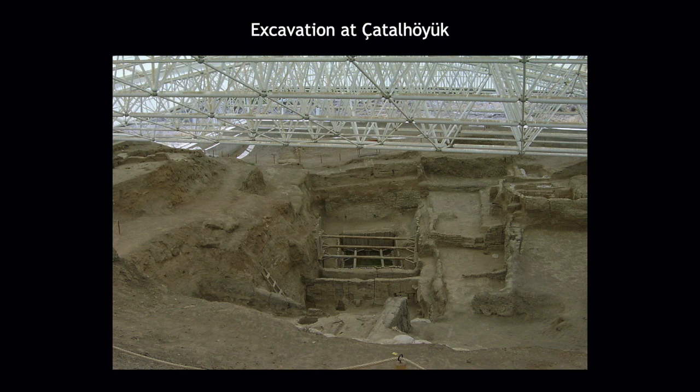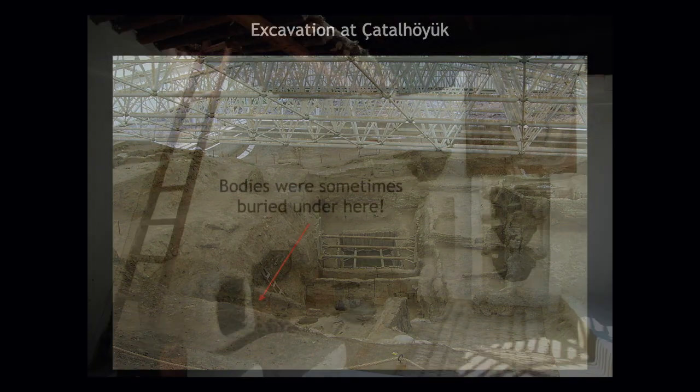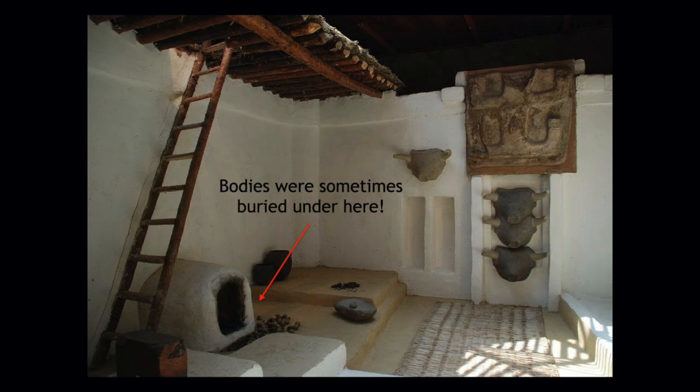There were no footpaths or streets between the dwellings — they were clustered in a honeycomb-like maze and most were accessed by holes in the ceiling, with doors reached by ladders and stairs. The rooftops were effectively streets. The ceiling openings also served as the only source of ventilation, allowing smoke from the houses' open hearths and ovens to escape. While earlier structures made of materials like mammoth tusks did provide shelter, houses had more significant functions for the communities who lived in them.